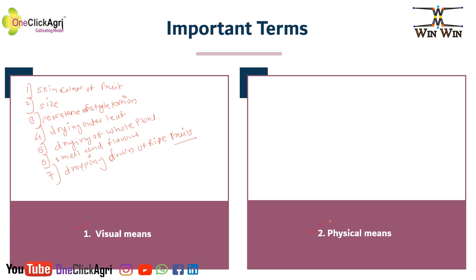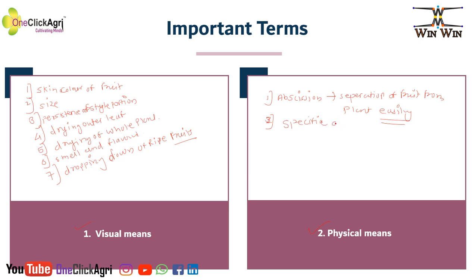Second is physical means — it means we are touching that particular fruit physically. In that, first is Abscission, which means separation of fruit from plant easily. Second, specific gravity. And third, weight of fruit.